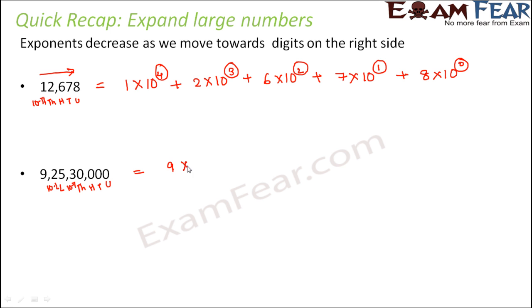You can write it as 9×10⁷ + 2×10⁶ + 5×10⁵ + 3×10⁴ plus you have all zeros after this. So here also you see the same thing as you move towards right, the value of the exponent gradually decreases.